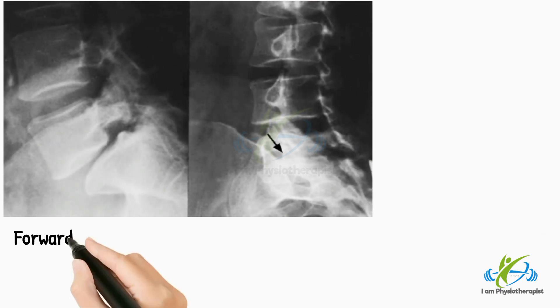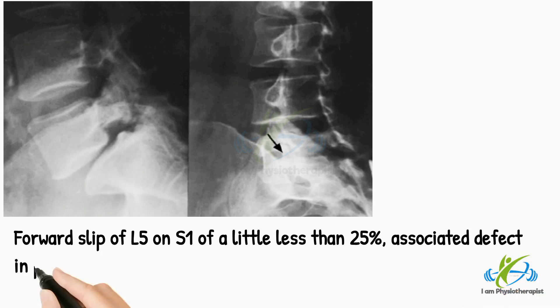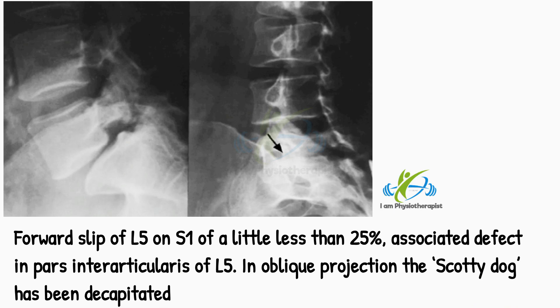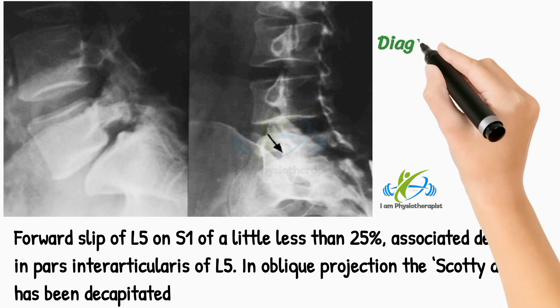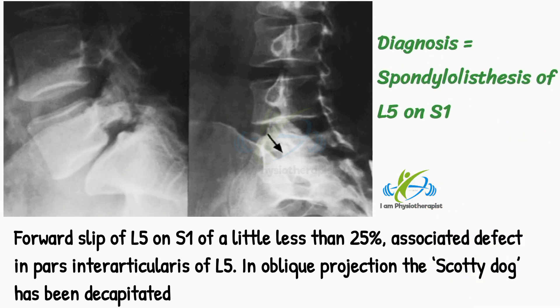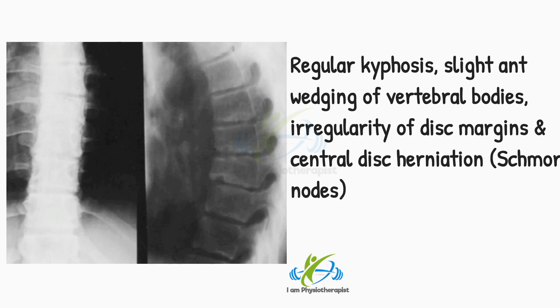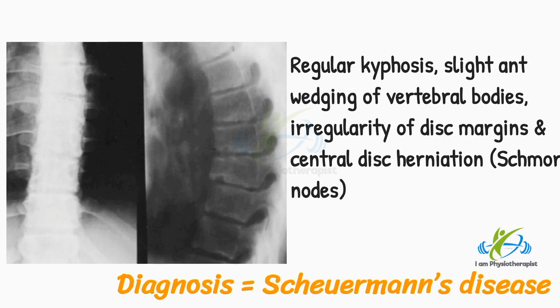This lateral radiograph shows forward slip of L5 on S1 of a little less than 25%, with an associated defect in the pars interarticularis of L5. In the oblique projection, the 'Scotty dog' has been decapitated. The patient complained of low back and buttock pain. Diagnosis is long-standing spondylolisthesis of L5 on S1. In this radiograph, there is a regular kyphosis with slight anterior wedging of the vertebral bodies, irregularity of the disc margins, and central disc herniation — Schmorl's nodes. Diagnosis: the appearances are typical of Scheuermann's disease.